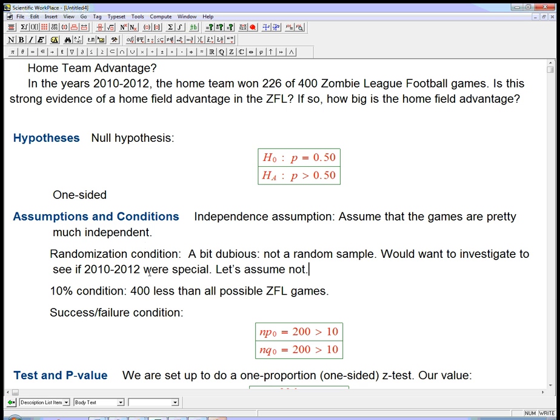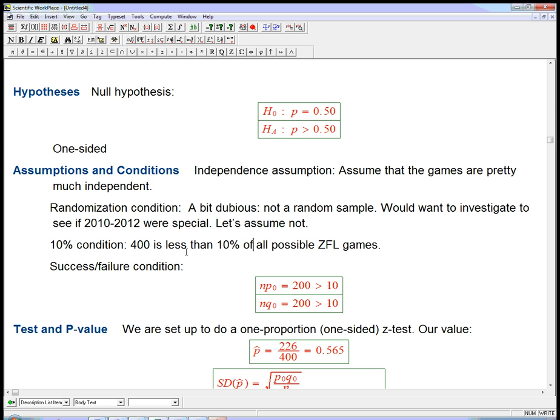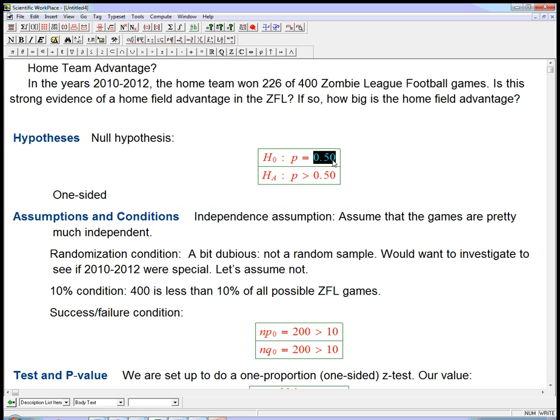10% condition: 400 is less than all possible ZFL games. The population here is really all possible, including future ZFL games. Success/failure condition is the most straightforward. We look at the null value for the proportion, that's 50%, and we do the np and nq test. We've got 400, so that's 200 and 200 for np₀ and nq₀, much bigger than 10.